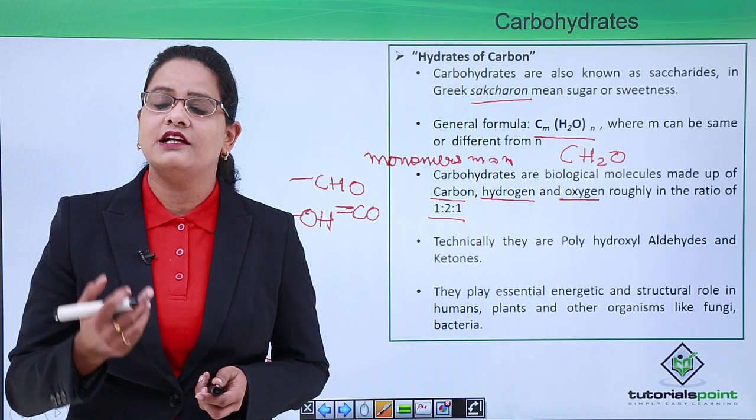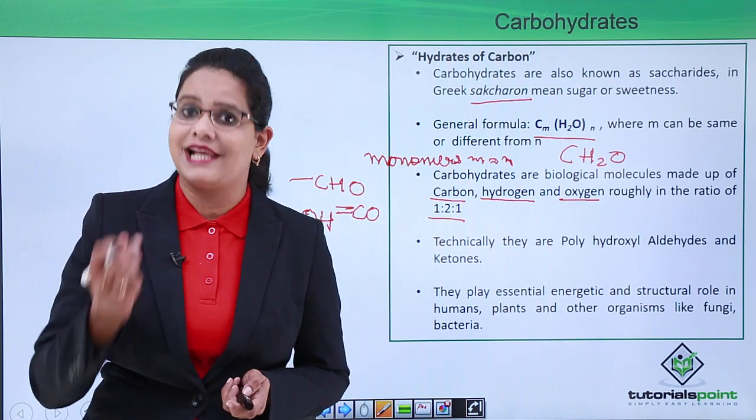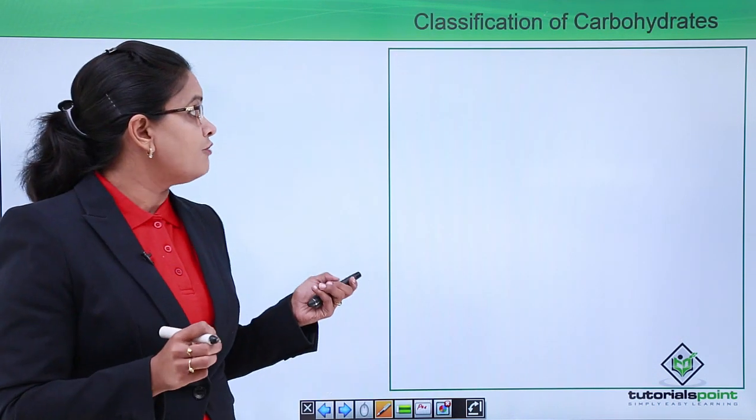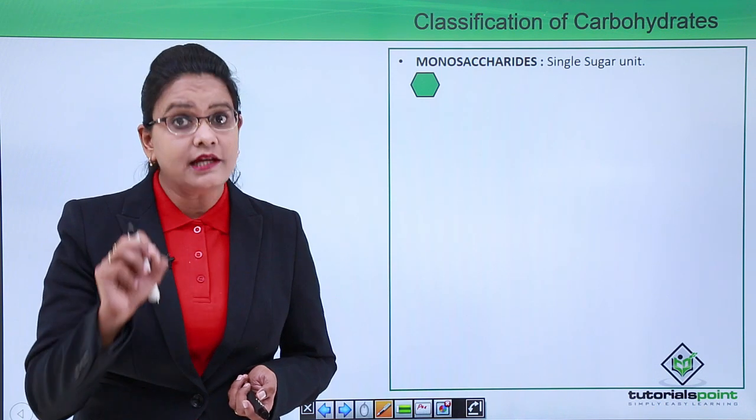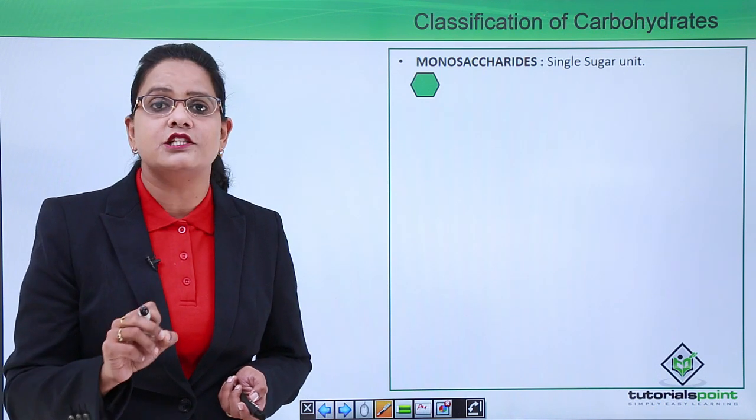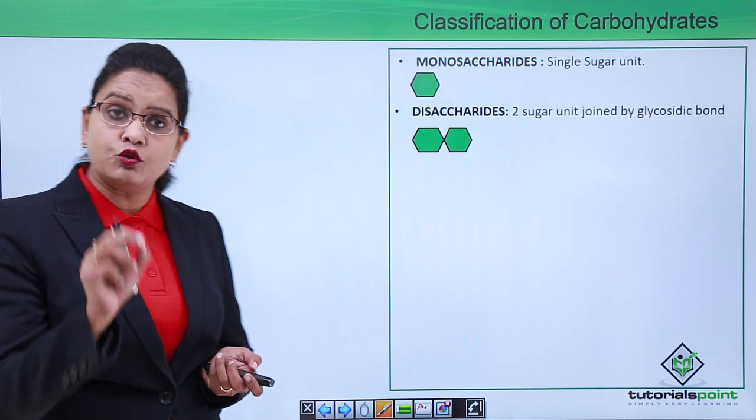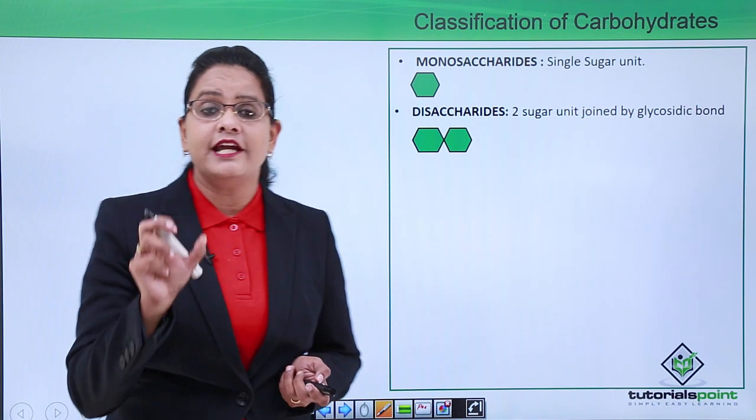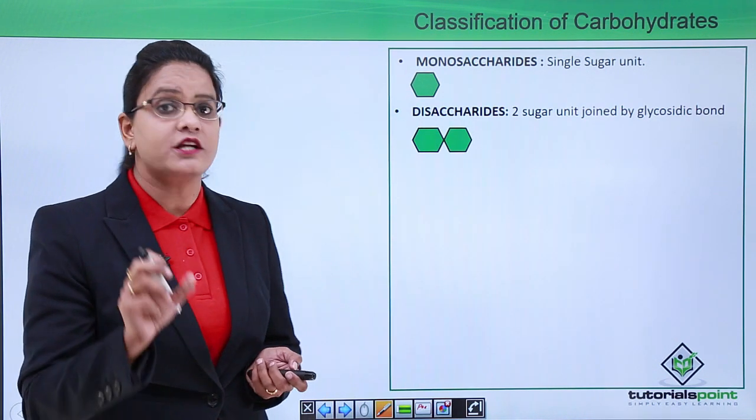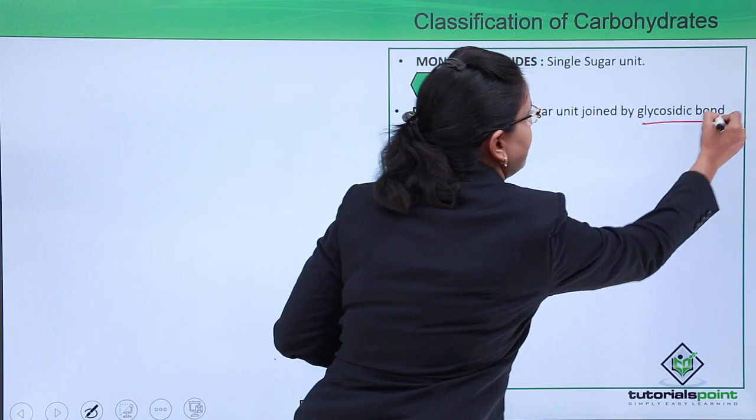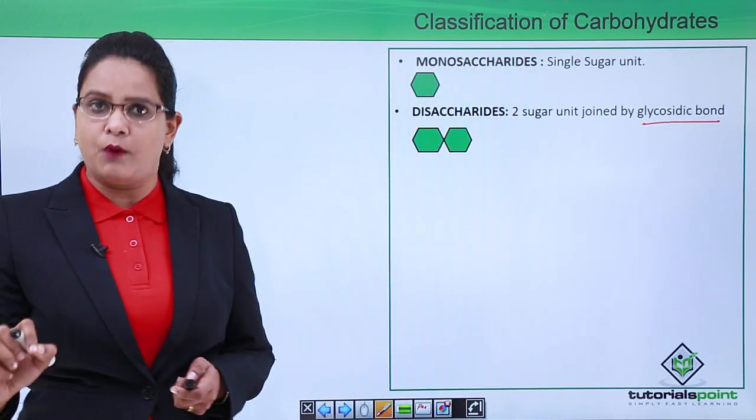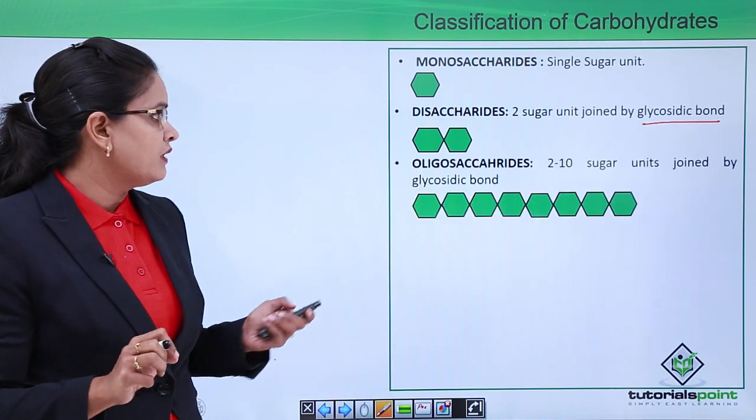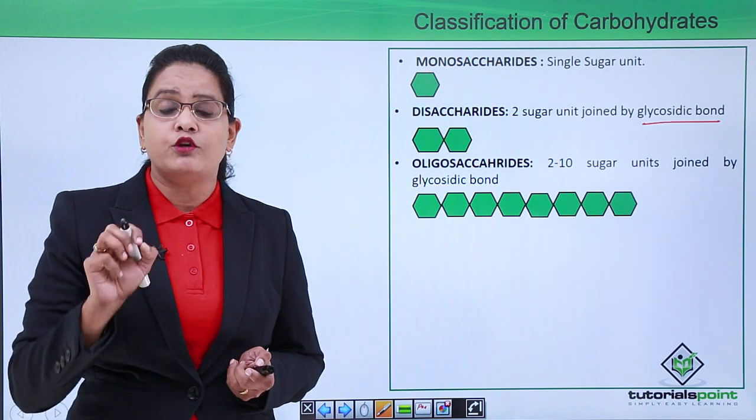Now let us move forward and try to understand carbohydrates more. How are they classified? Let us have a look at classification of carbohydrates. First, monosaccharides—when a single sugar unit is present it is known as monosaccharide. Now if two sugar units are joined together it is known as disaccharide. The bonding plays a crucial role and what is that bond called? That bond is called glycosidic bond. We will discuss in detail about glycosidic bond in future videos. The oligosaccharides have two to ten sugar units joined together.